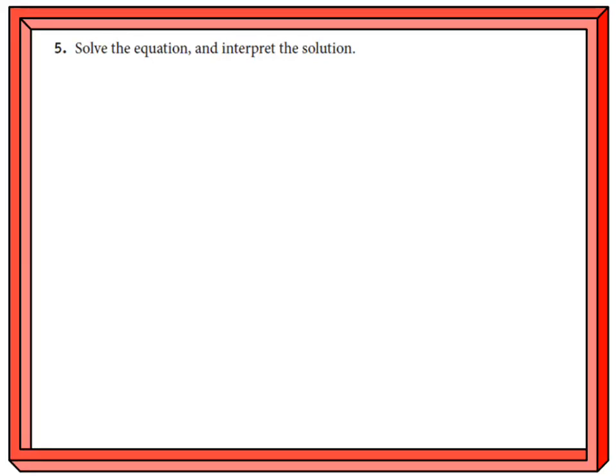Solve the equation on number 5 and interpret the solution. The equation is referring to that helicopter one that we wrote on question 4, which if memory serves was 80, that was the number of miles, that's the distance, is equal to the rate which was 172 over 60 times m.